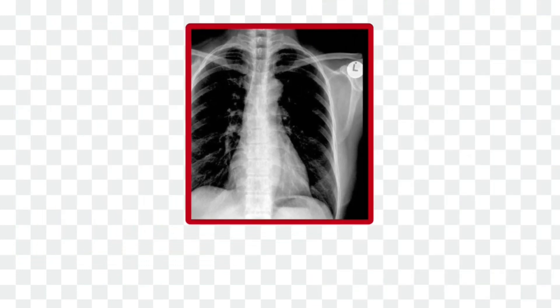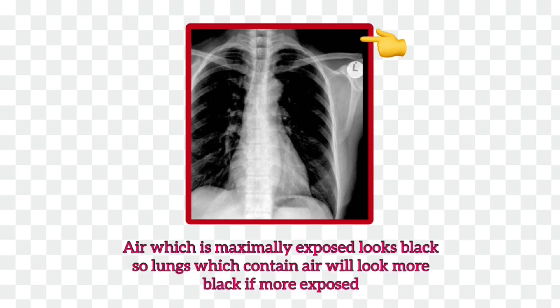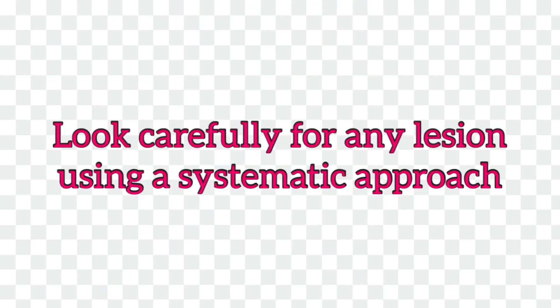There is one simple way to remember whether the lung shadow will appear blacker or darker with the degree of exposure: look at the shadow cast by air. The side which is maximally exposed is dark, so when the lung is overinflated it will appear darker because it contains air. Now that we have checked the quality of the chest x-ray film, we need to start scanning the film for any lesion.